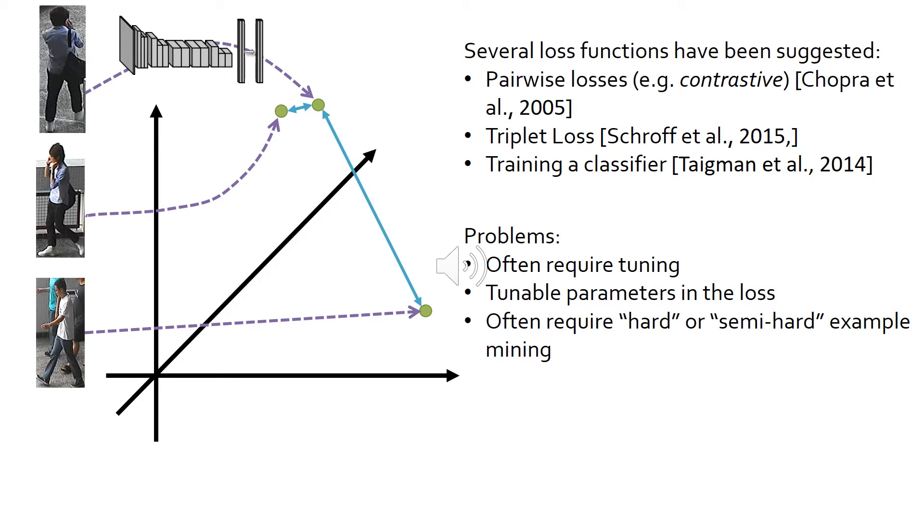Unfortunately, despite clear intuition behind different losses, using them in practice is often tricky. Optimal performance of the resulting embedding often requires tuning of the learning parameters, including parameters associated with the losses, such as margins. Some losses also require mining difficult pairs in order to obtain good embeddings.